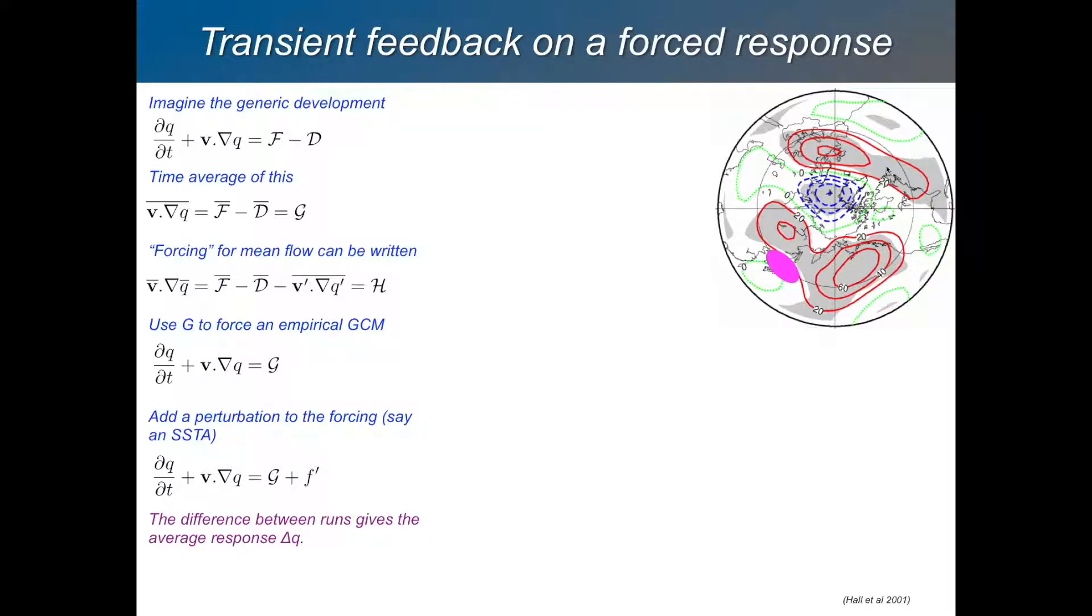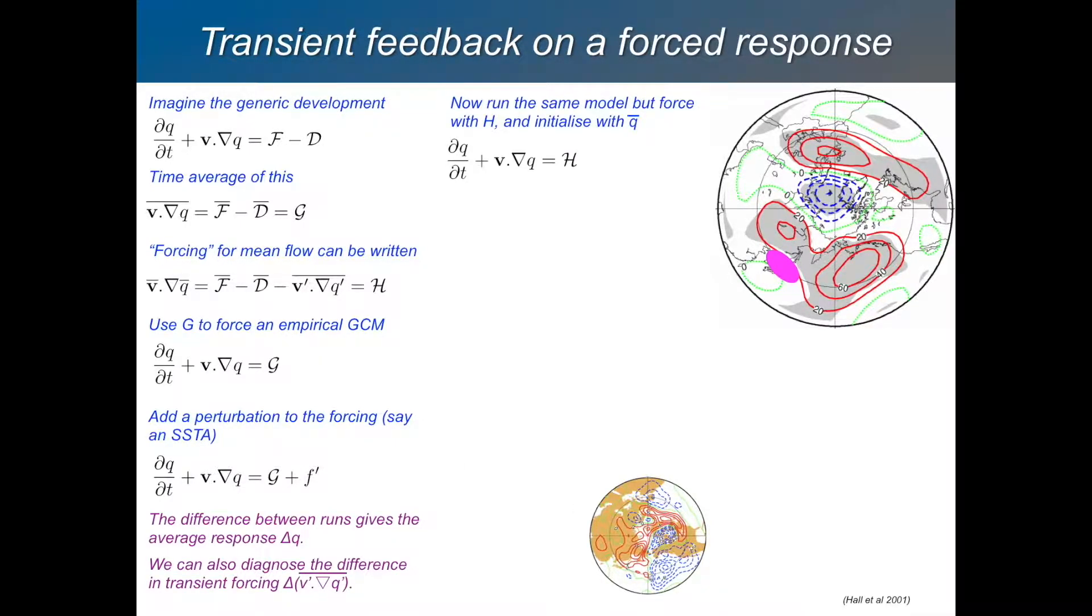Now let's ask the question, what is the importance of the transients in that response? You can diagnose the part which is due to the change in the transient forcing. Because these two experiments will not necessarily have the same value of this transient component to the forcing. Here's the difference in that. Now let's do another experiment. Let's take the same model. Instead of forcing it with G, we'll force it with H.